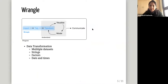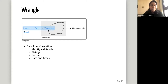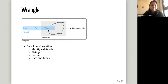The next chapter is just the introduction to the next section called Wrangle, where we learn how to really get useful information out of our data. The following chapters, which we'll be discussing in the next few weeks, will deal with importing data, tidying data, and transforming data. There will be different chapters in data transformation dealing with how to work with multiple datasets, strings, factors, dates and times, and things like that.